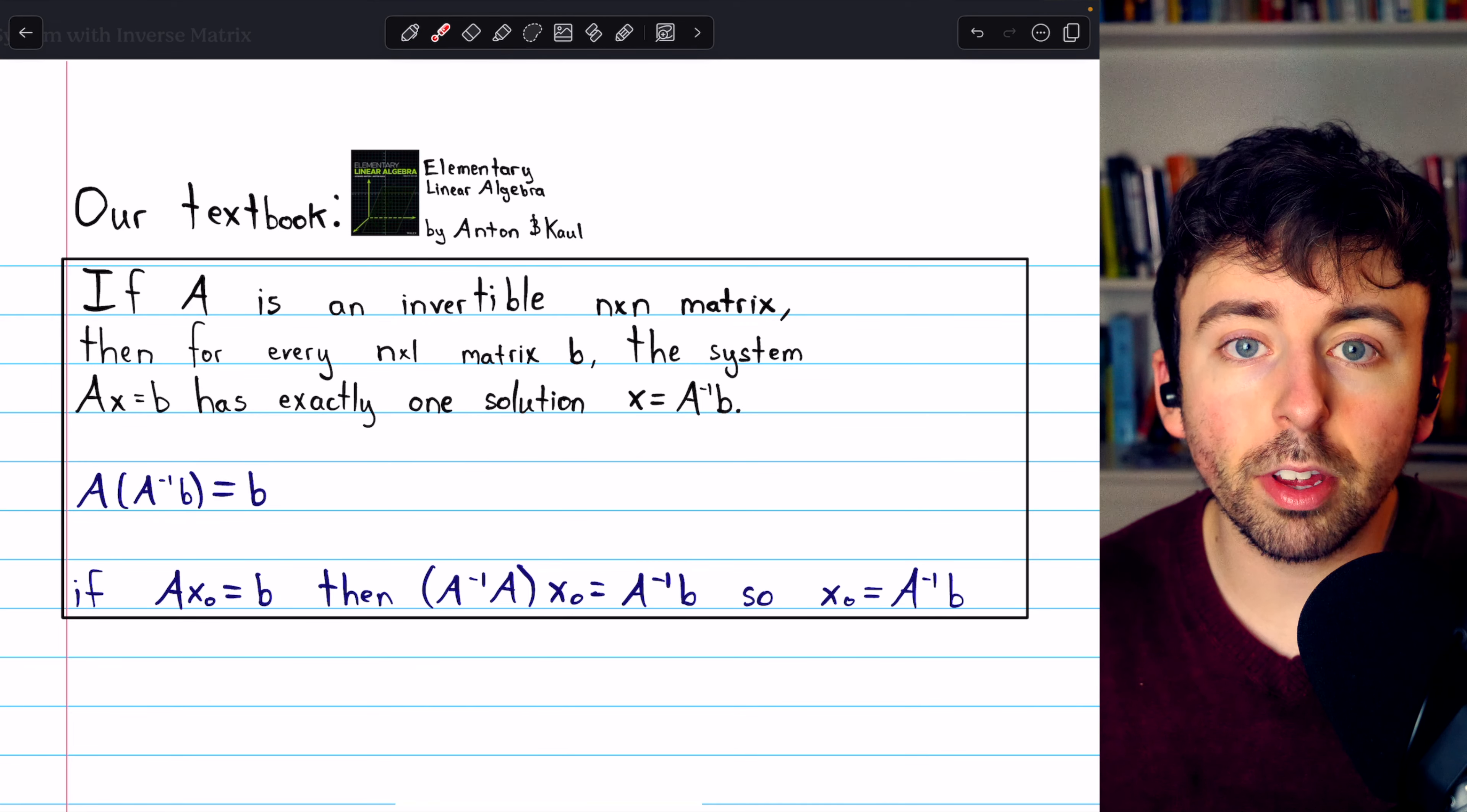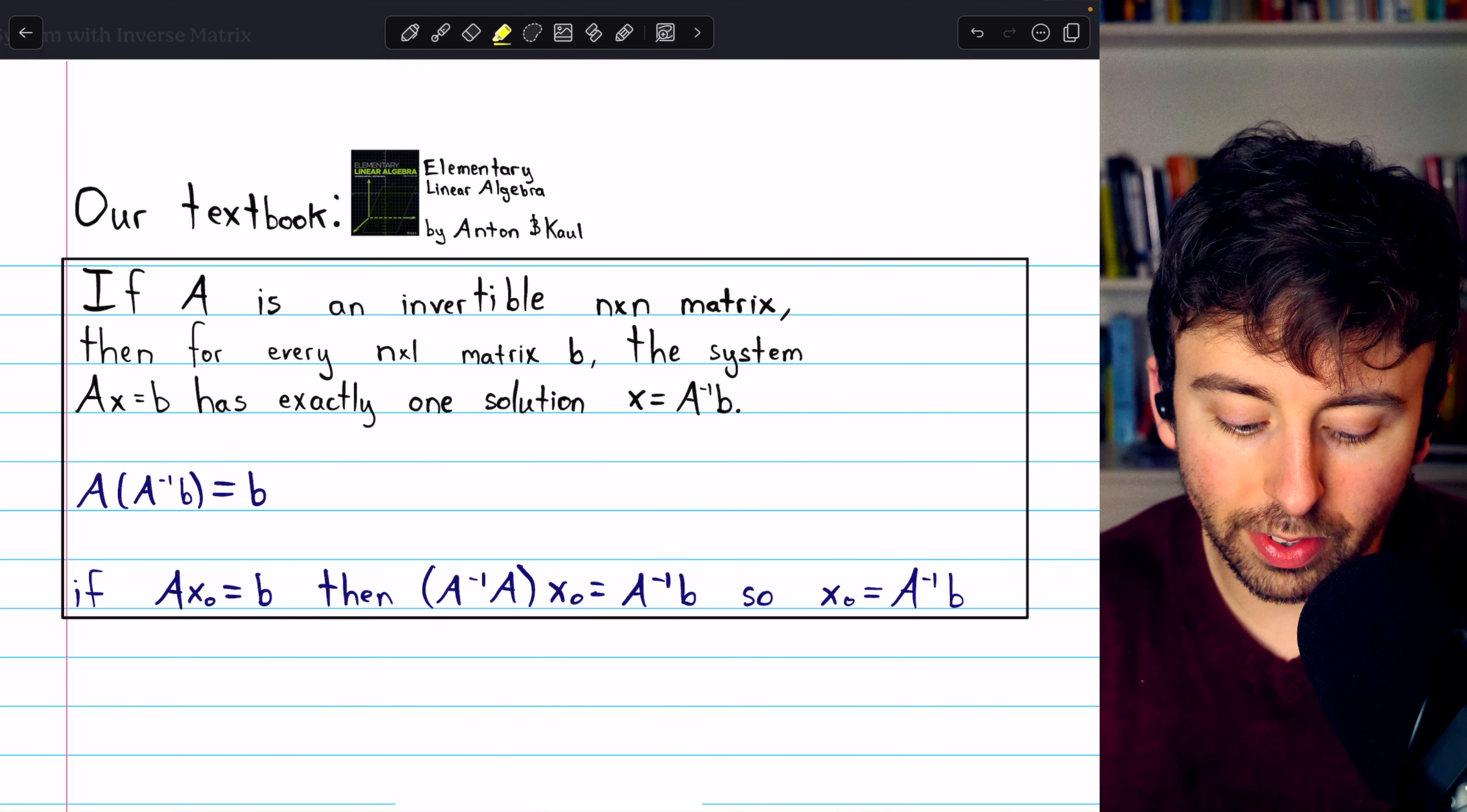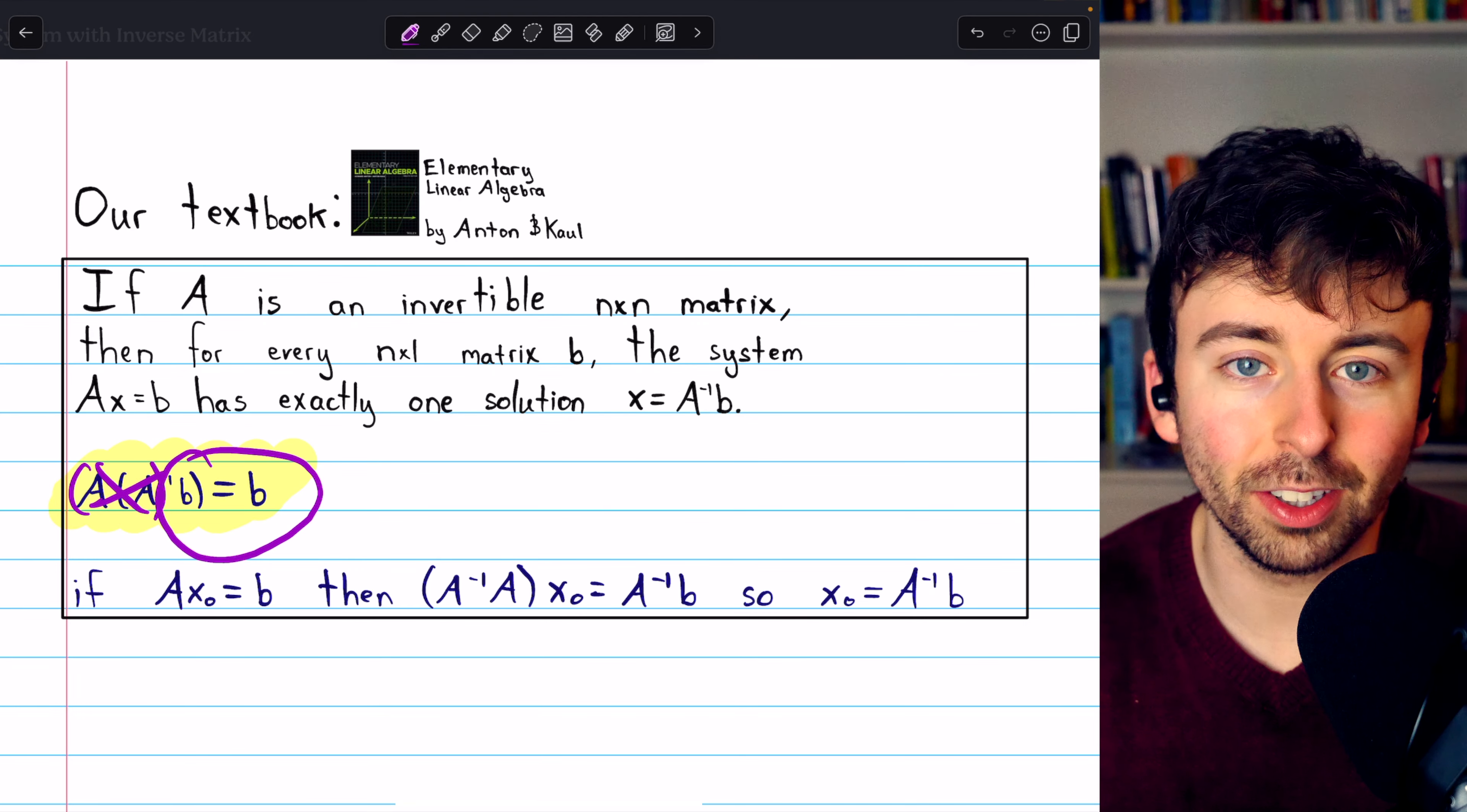Before we do a couple examples solving a non-homogeneous linear system like this, we can very quickly prove that this is true. First, let's prove that x equals A inverse B is a solution. We can see that obviously it is, because if we plug in A inverse B to Ax equals B, well, A and A inverse cancel out, and that just leaves B equals B. So clearly we have a solution.